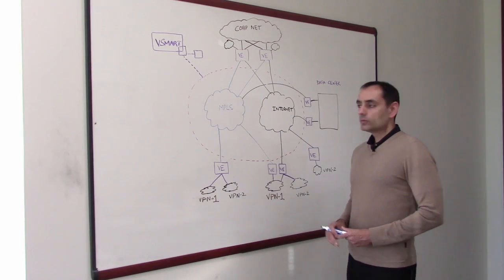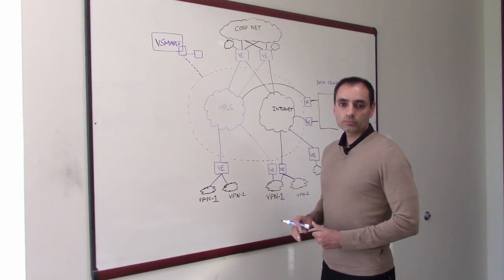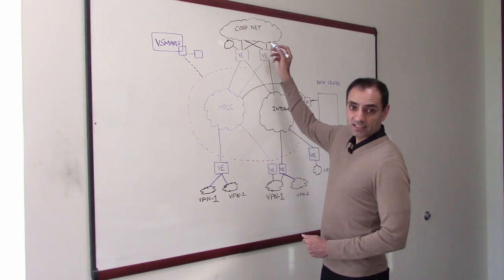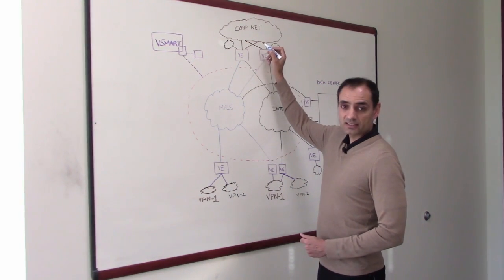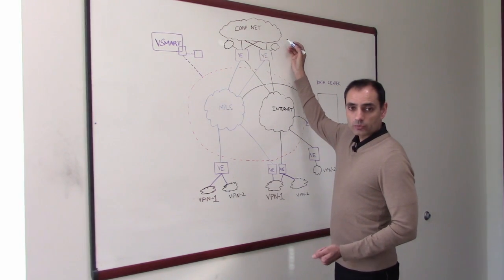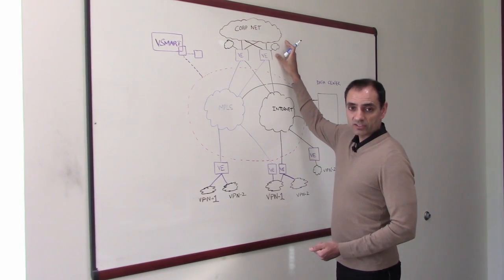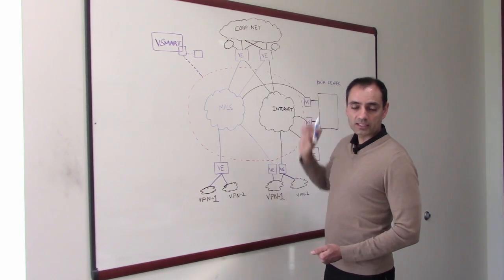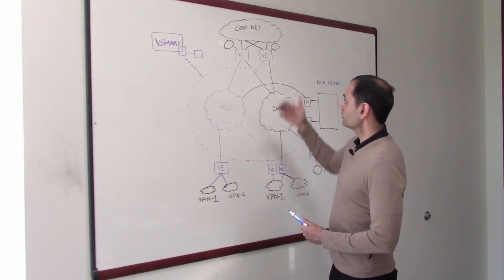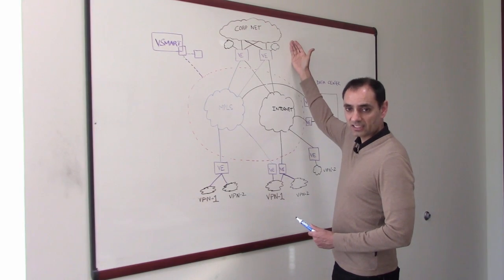Second, within a given site you could have an existing network and you should be able to seamlessly integrate with it. For example, at a corporate site you could be running OSPF or BGP with your existing network devices. You could be connected to Layer 2 switches, and you could have IPv4 unicast or multicast.